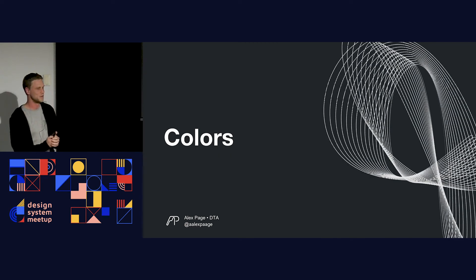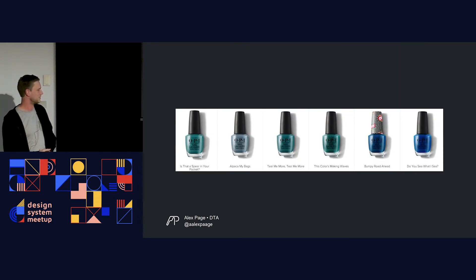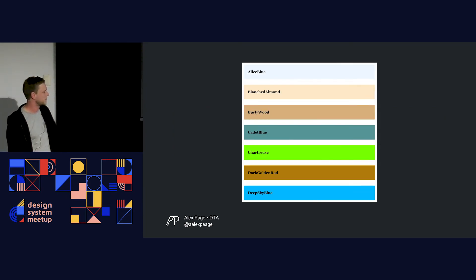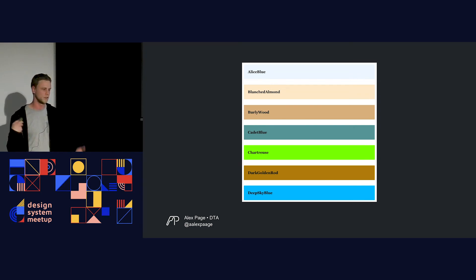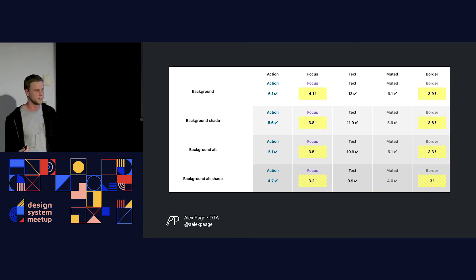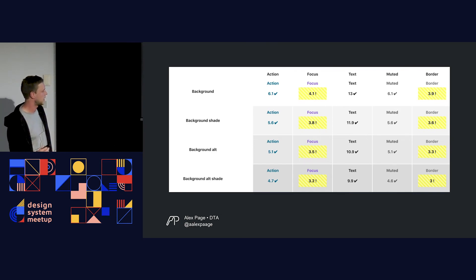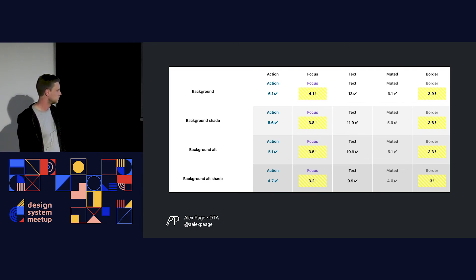Colors — a classic one when people think of naming things in design systems. I think about my girlfriend's nail polishes — things like 'alpaca my bags' for a blue color, great puns like that. You can have a lot of fun with colors. This isn't new — CSS has had colors like Alice Blue, Burly Wood, and Dark Goldenrod. For our design system, we've gone more functional. Our colors need to meet accessibility, so it's important that foreground colors pass on background colors. Our colors are: AU color foreground action, AU color foreground focus, AU color background, AU color background shade — so you know if you put a foreground on a background you'll meet contrast and accessibility.